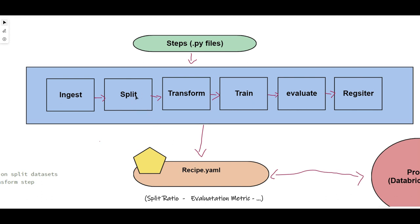For example, you have split.py that splits your data for training, validation, and testing — you have to specify a ratio. Let's say I want to split 80% for training and 20% for testing — those are the ratios. You define the value of this ratio as a parameter inside the recipe YAML. You say: as the second step, run split, and for ratio, here is the value — 80-20. Similarly for evaluation, you define the metric — like accuracy, precision, recall for classification, or root mean squared error for regression.